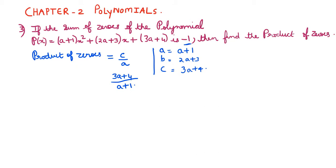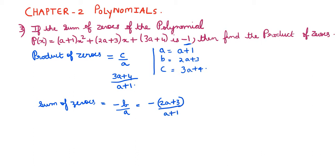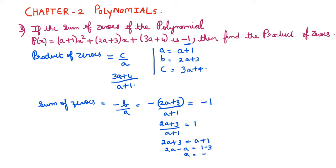First we use the given data — sum of zeros equals minus 1 — to find a. Sum of zeros equals minus b by a, so minus(2a plus 3) divided by (a plus 1) equals minus 1. The two minuses cancel, giving (2a plus 3) divided by (a plus 1) equals 1. Cross-multiplying: 2a plus 3 equals a plus 1, so 2a minus a equals 1 minus 3, giving a equals minus 2.